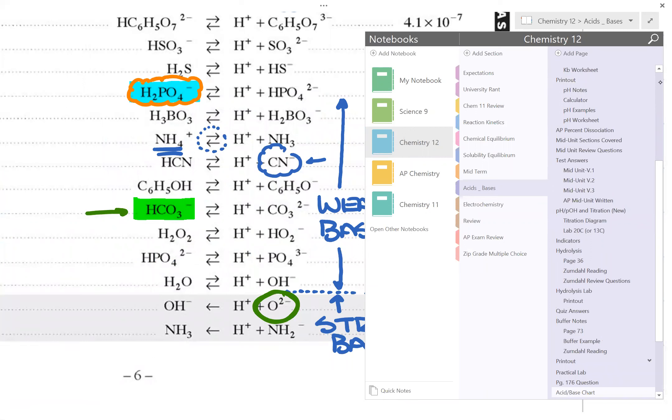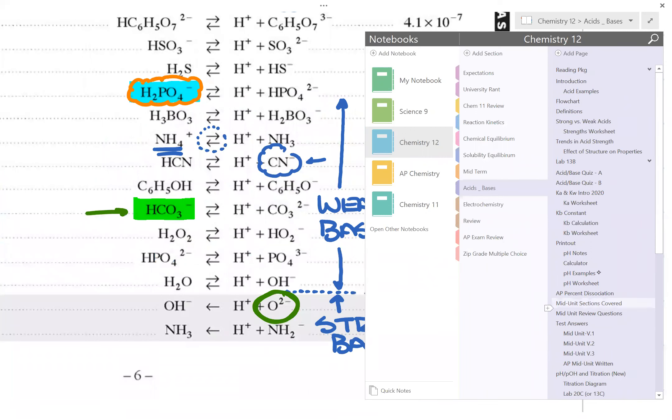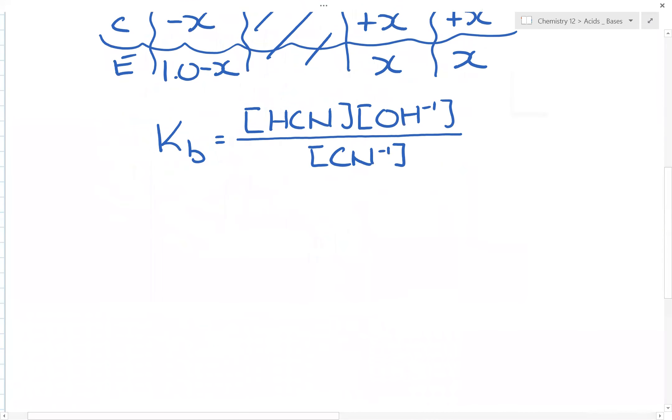So here, when you're doing your calculation, what you have is you could have Kw all over Ka of the conjugate acid, which is HCN, is equal to x squared all over 1.0 minus x.